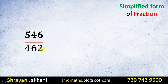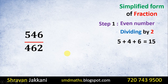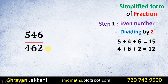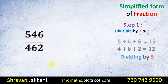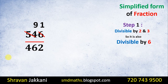Let's take another good example: 546 and 462. In step 1, both are even numbers so we check divisibility. Let's check divisibility by 3: add digits of 546 — 5 plus 4 plus 6 is 15. For 462: 4 plus 6 plus 2 is 12. Both 15 and 12 are divisible by 3, so both numbers are divisible by 3. Since both are also even, both are divisible by 6. Dividing: 6 times 91 is 546 and 6 times 77 is 462, giving 91 by 77.